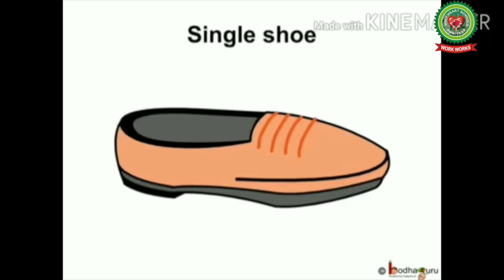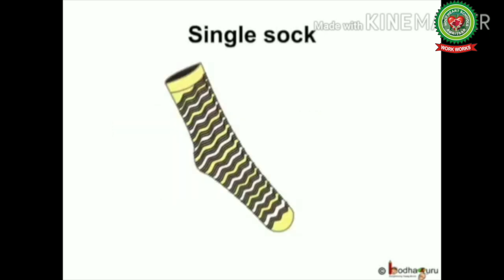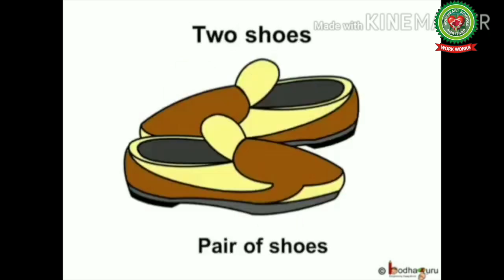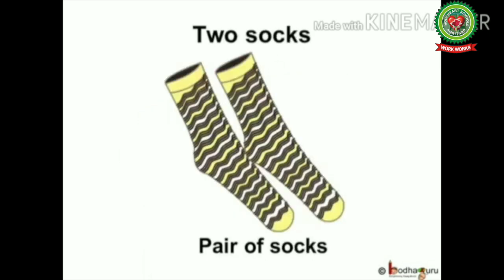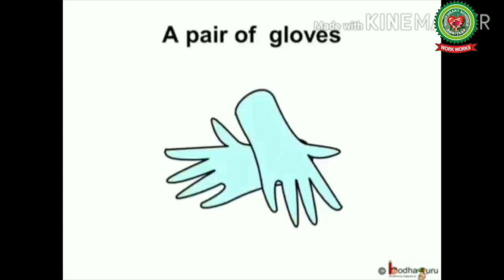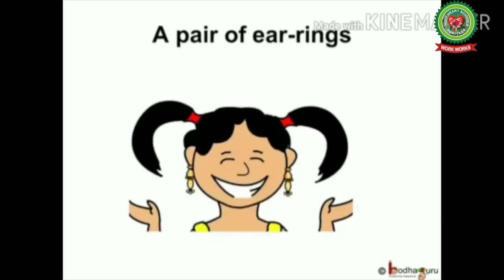This is a shoe. When we have only one shoe or one thing, we call it single. So this is a single shoe. When you have one sock, you call it a single sock. But when we have two shoes, we call it a pair of shoes, or when we have two socks, we call it a pair of socks.